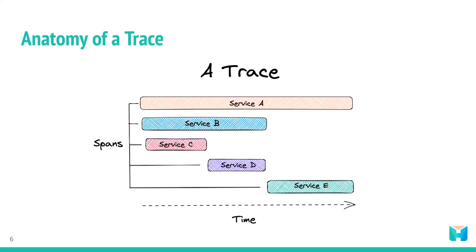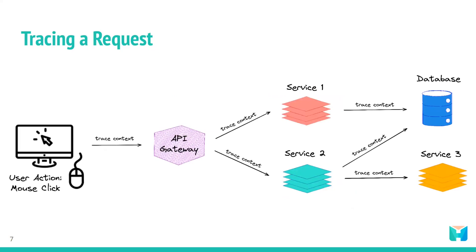Each span contains data such as the start and end times of the work, as well as any metadata that might be relevant to understanding the span. The trace can help engineers identify the different services the request passes through and how they interact with each other. By analyzing this trace, developers can determine where the request spent the most time and which services were involved. This information can be used to identify performance bottlenecks, optimize the system, and improve the user experience.